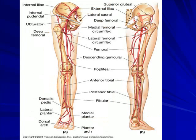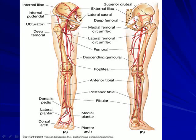In the lower extremity, you should identify the external iliac, internal iliac, deep femoral, femoral, popliteal, dorsalis pedis, and posterior tibial vessels. The posterior tibial is important because you can press it against the lateral malleolus of the tibia to palpate a pulse. The dorsalis pedis can be palpated by compressing it against the metatarsal bones.